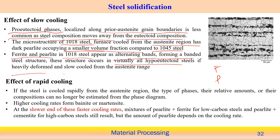This banded structure of alternating ferrite and pearlite layers forms when the steel is heavily deformed and slow cooled from the austenitic range. If the cooling rate is too high, this banded structure is not expected. Rapid cooling restricts diffusion, leading to different microstructures.